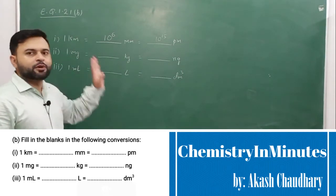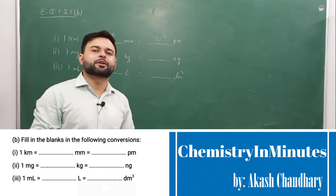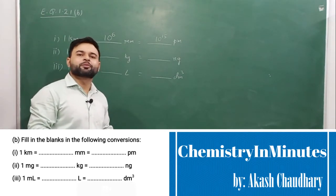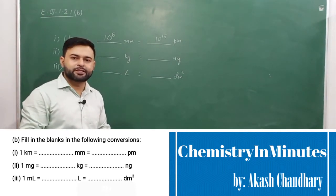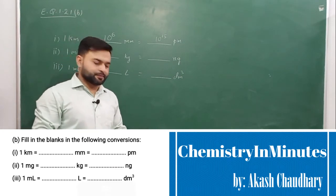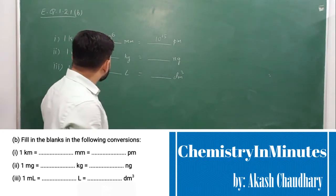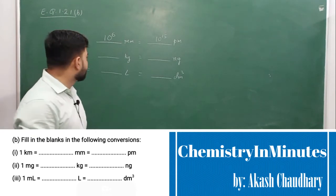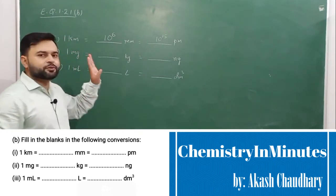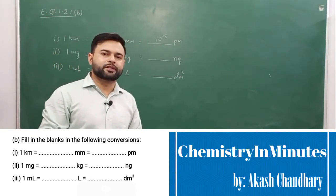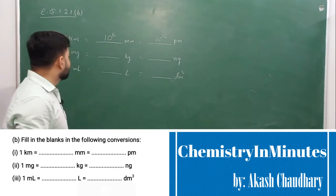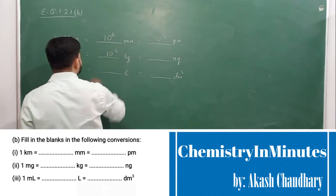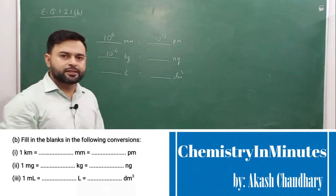Now, 1 milligram. 1000 grams is equal to 1 kilogram, so 1 gram is equal to 10 raised to the power minus 3 kilograms. Therefore, 10 raised to the power minus 3 into 10 raised to the power minus 3 is 10 raised to the power minus 6 kilograms.